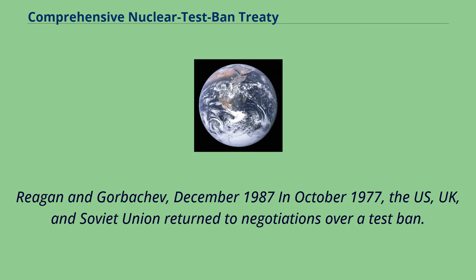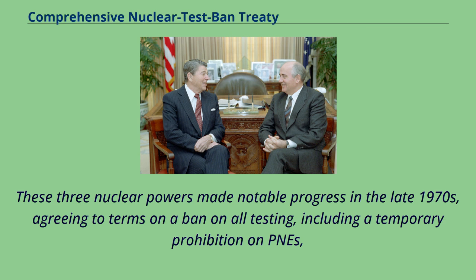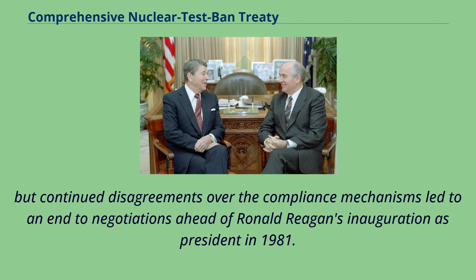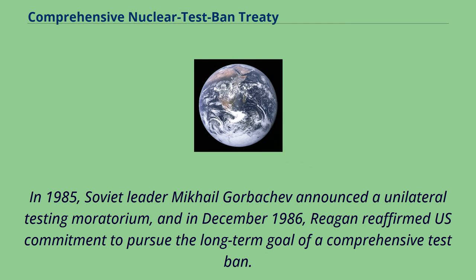In December 1987 and October 1977, the U.S., U.K., and Soviet Union returned to negotiations over a test ban. These three nuclear powers made notable progress in the late 1970s, agreeing to terms on a ban on all testing, including a temporary prohibition on peaceful nuclear explosions. But continued disagreements over the compliance mechanisms led to an end to negotiations ahead of Ronald Reagan's inauguration as president in 1981. In 1985, Soviet leader Mikhail Gorbachev announced a unilateral testing moratorium, and in December 1986, Reagan reaffirmed U.S. commitment to pursue the long-term goal of a comprehensive test ban.